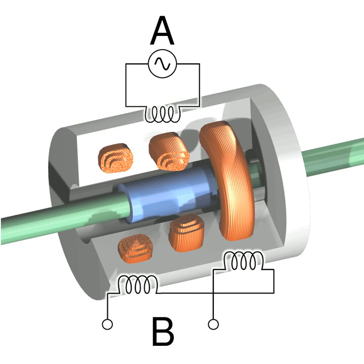The Linear Variable Differential Transformer, also called Linear Variable Displacement Transformer, Linear Variable Displacement Transducer, or simply Differential Transformer, is a type of electrical transformer used for measuring linear displacement.